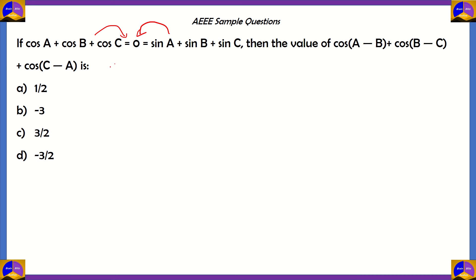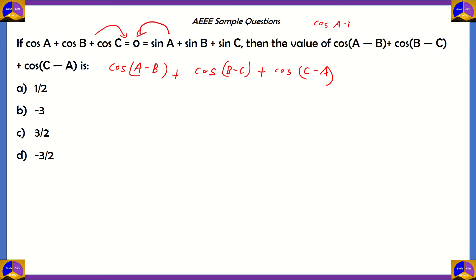Let's write down the given expression again: cos(A-B) plus cos(B-C) plus cos(C-A). We're computing cos of one number minus another number. So cos(A-B) can be written down as cosA cosB plus sinA sinB. We'll have to apply that particular formula to all three of our cosine functions.